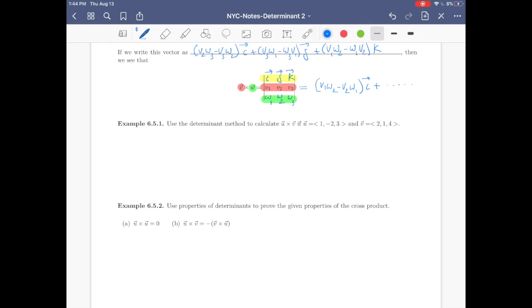Example 6.5.1: Use the determinant method to calculate u cross v if u is (1, -2, 3) and v is (2, 1, 4). Okay, u cross v, as we saw, you put i, put j, you put k, you respect the order, first u and then now you put v.